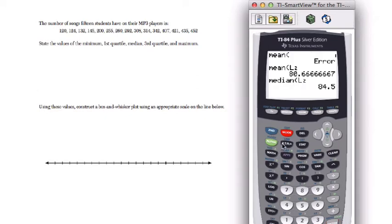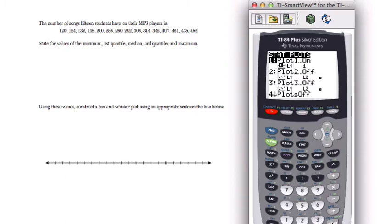Now we quit out of this. Now we make sure we go to second stat plot. Okay, my first stat plot is on. I'll check that. I've got the box and whisker plot set up. Fantastic.